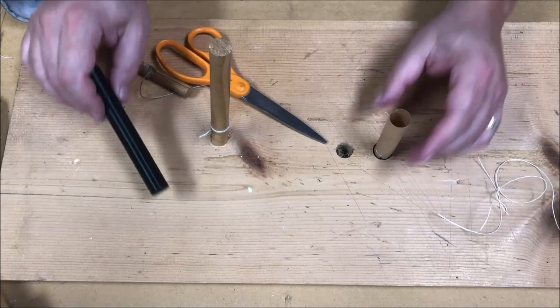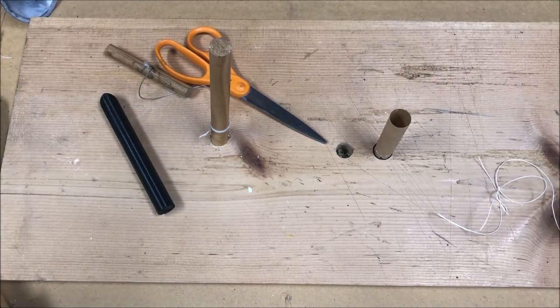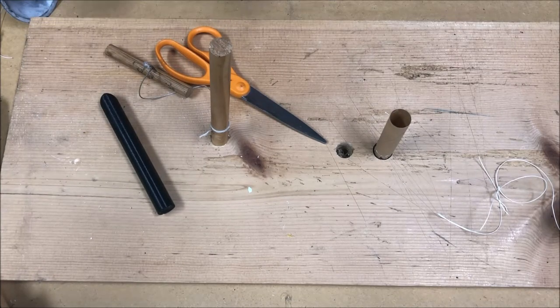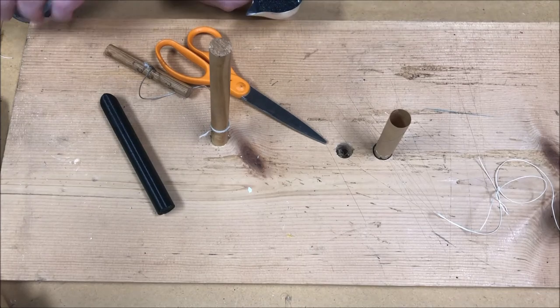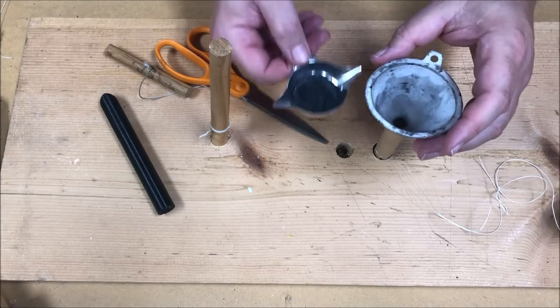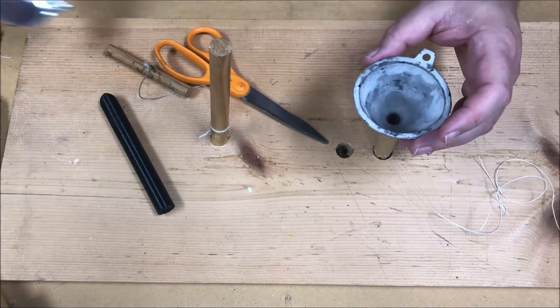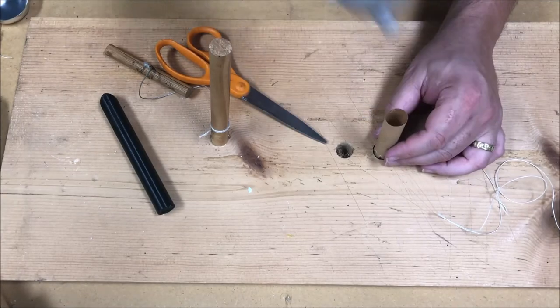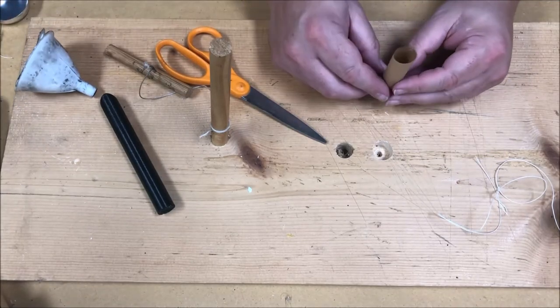To finish the cartridge off, you remove the mandrel. And for a percussion musket, it was 110 grains of musket powder.